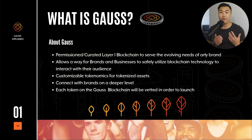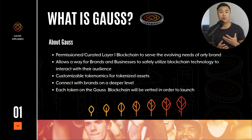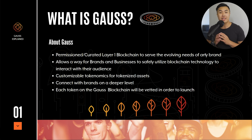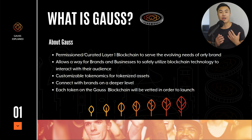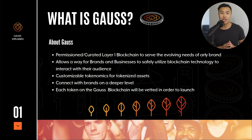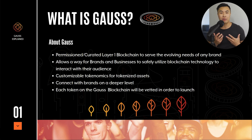So if you're a fan, supporter, or even an investor, you can interact with the brand at a much deeper level — and this hasn't been done in crypto before. What makes this layer one blockchain different from all the others is that each token on the Goss blockchain would need to be vetted in order to launch. That includes an audit, verified tokenomics by the team, and it's also going to be looked over by third-party members.